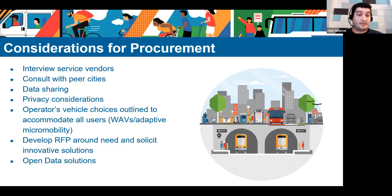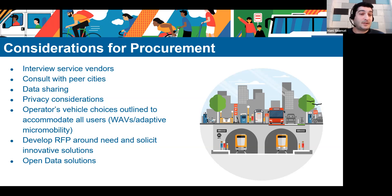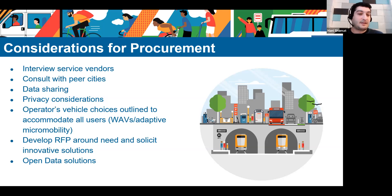Briefly on procurement considerations — these are very broad and context-specific. Consult with peer cities, interview service vendors, and potentially use an RFI to figure out how new technology and mobility options can integrate in your community. Both micromobility and microtransit are generally tech-enabled, so it's important to consider privacy and data sharing needs of the system. Also important: ensure you have accessible options that can accommodate all users — for example, wheelchair-accessible vehicles in microtransit service or adaptive micromobility. Develop the RFP around those needs and solicit innovative solutions.